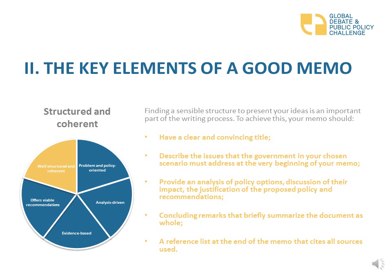Your memo should include a description of the problem and proposition of the preferred policy — describe the issues that the government in your chosen scenario must address at the very beginning. A main text where you provide a comparative analysis of policy options, a discussion of their impact, and a justification of the proposed policy. Concluding remarks that briefly summarize the document as a whole. And finally, a reference list at the end of the memo that cites all sources used.